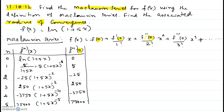In order to determine the various derivatives of f at 0, we will create a table. The first column is n, which denotes the order of the derivative, then the nth derivative of f at x, and then the nth derivative of f at 0.